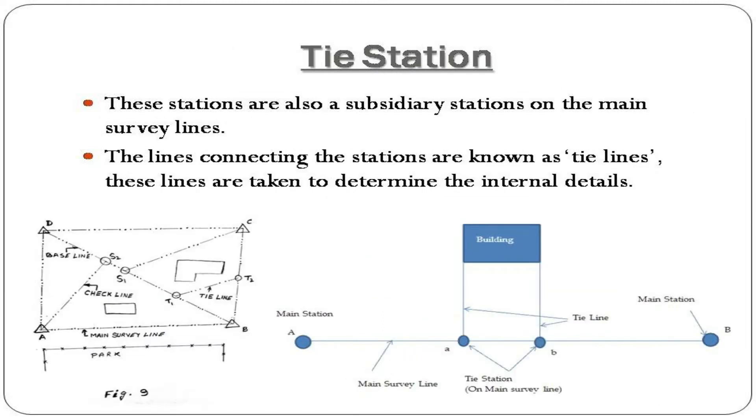Tie stations are also subsidiary stations. On the main survey lines, the lines connecting these stations are known as tie lines. These lines are taken to determine the internal details.